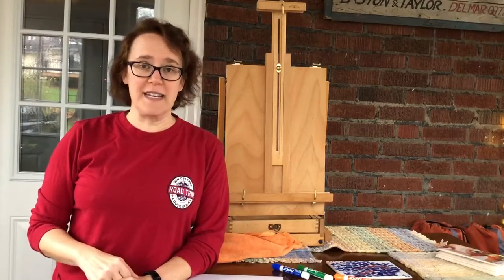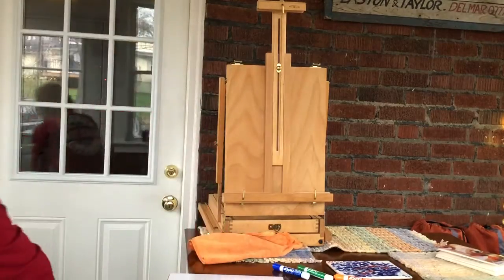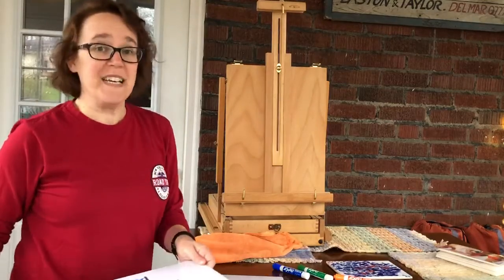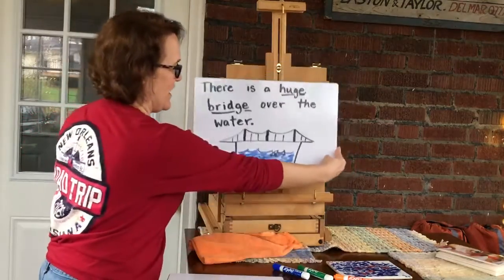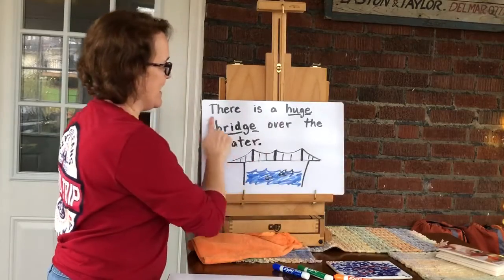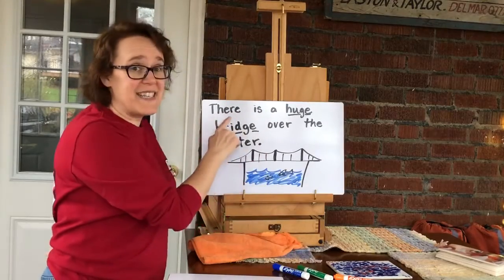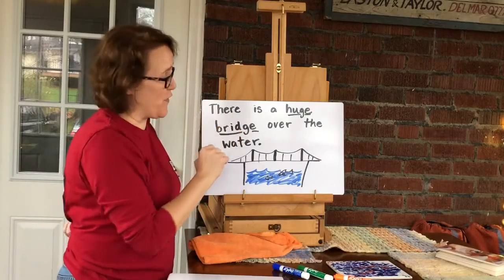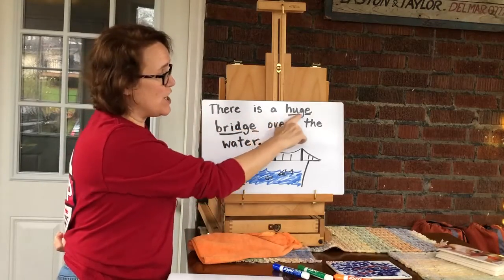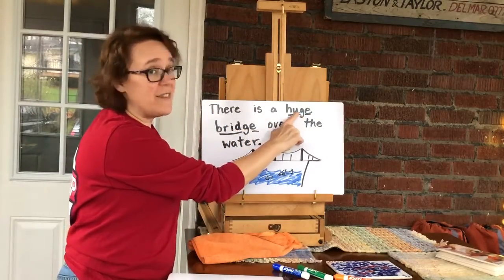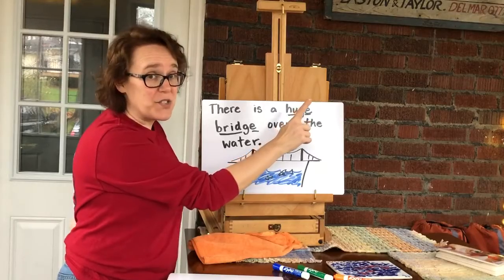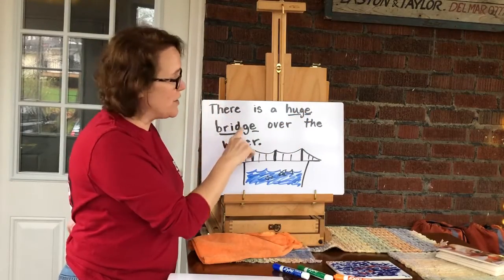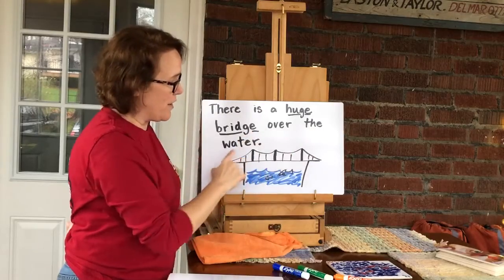Pause the video if you want to write it. Otherwise, here's what the sentence should look like. This is the correct 'there' because it's a place — it's got 'here' in it, in case you forgot that rule. There is a huge — long vowel, so we just use G-E. Bridge — short vowel, one-letter vowel, use D-G-E — over the water.